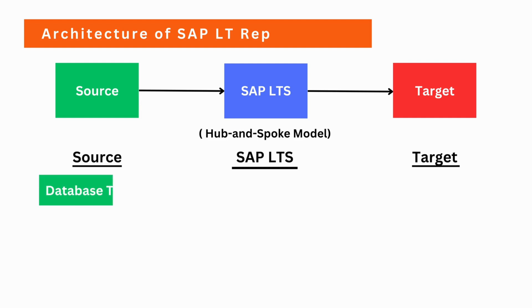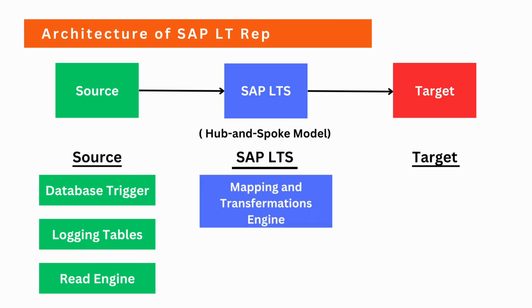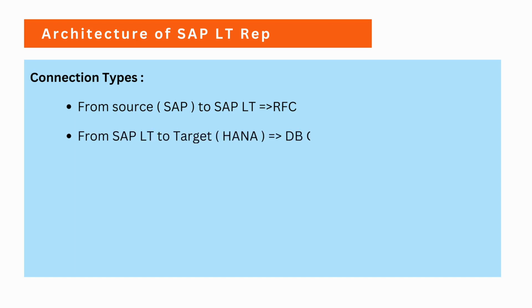On the source side, we have database triggers which capture the changes, logging tables, and a read engine. On the SLT side, we have a mapping and transformation engine and a write engine. From a communications standpoint, from source to SLT it uses RFC communication, and from SLT to the target system it uses a DB connection.